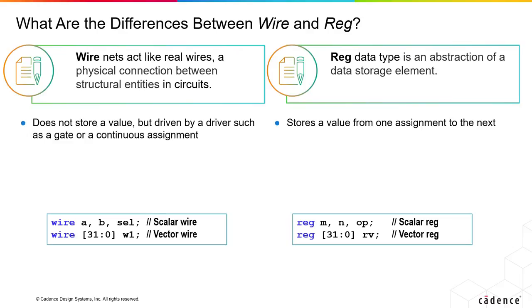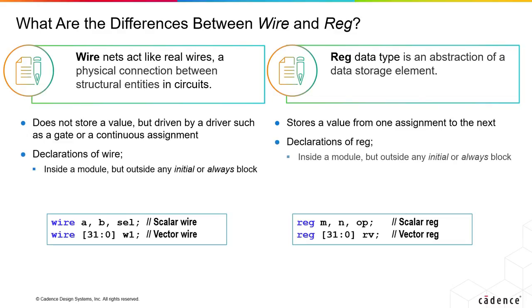So the wire is a real physical connection that externally will be resolved when there are multiple drivers. Next, when you declare a wire or a register, you actually declare them inside the module, but outside of any initial or always procedural blocks.